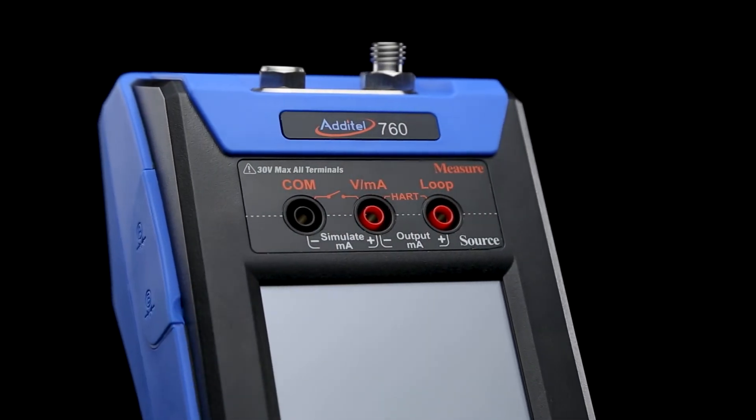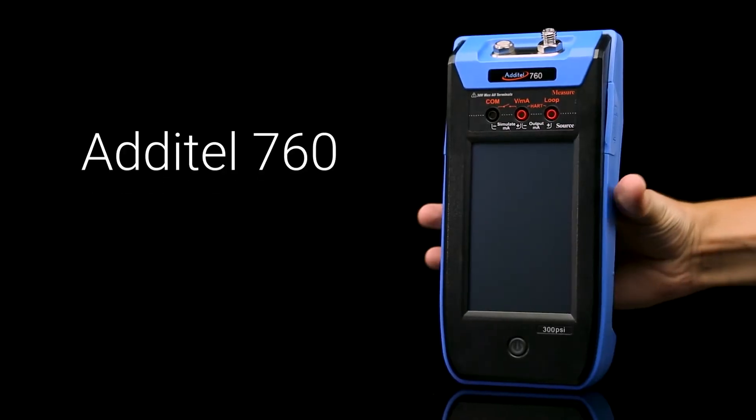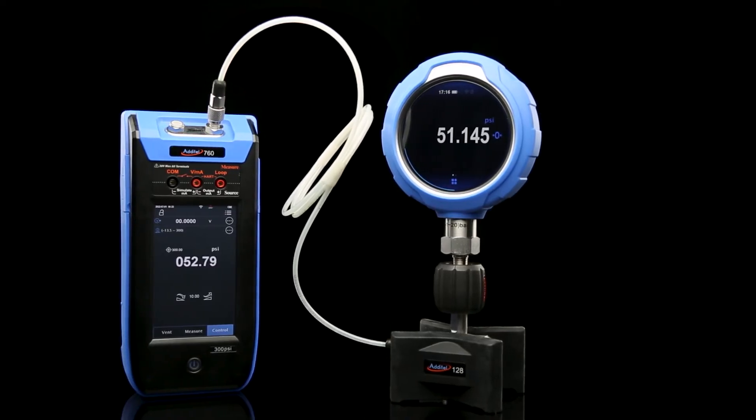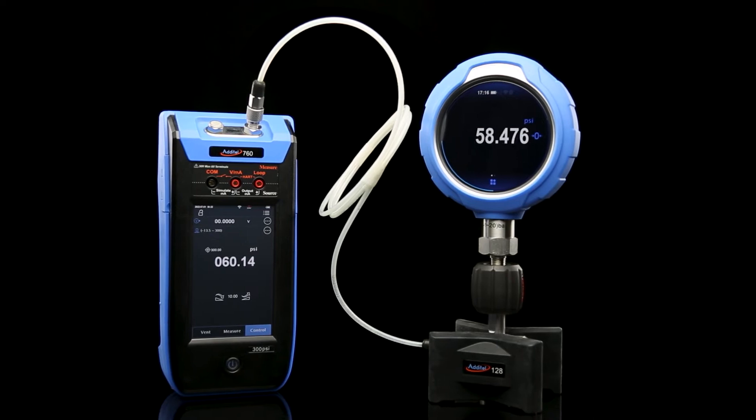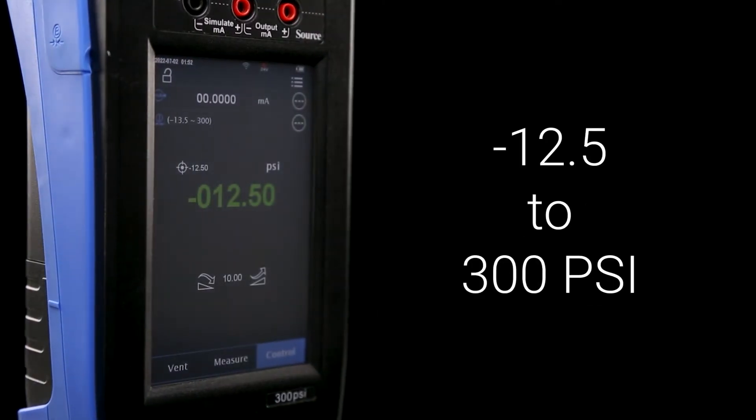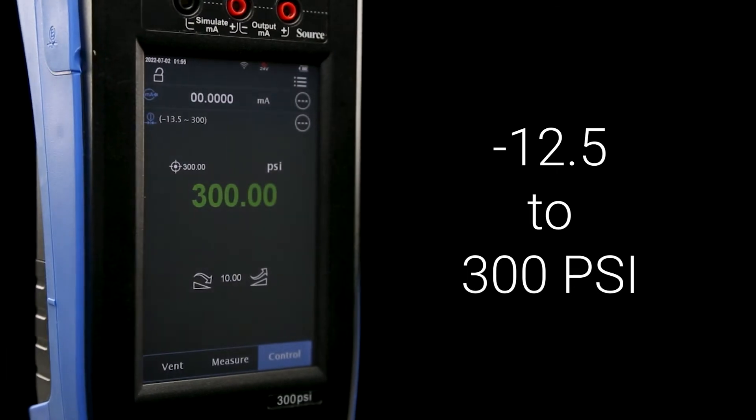Fully automated pressure calibration is now available in the palm of your hand with the Additel 760. The 760 is the fastest and easiest way to quickly calibrate pressure devices in the field, with self-contained pressure generation ranging from negative 12.5 up to 300 psi.